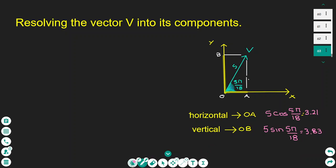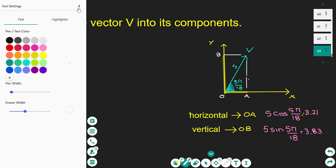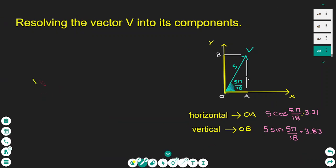So we can write the vector V as 3.21i, the horizontal part, plus 3.83j, the vertical component.